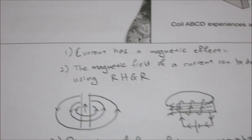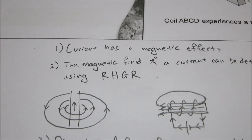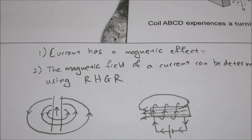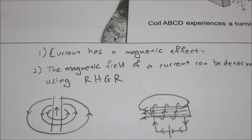Just to recap what was covered in the first video: we learned that current has a magnetic effect. When current flows, there's a magnetic field set up around the current. We used this in applications of electromagnets. Electromagnets are basically when electricity flows in a wire, it becomes like a magnet — only when electricity flows. That's why it's called an electromagnet.